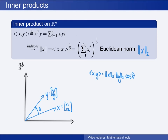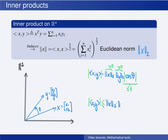Also, since the absolute value of cosine of theta is always less than or equal to 1, we see that this inequality agrees with Schwarz inequality. In particular, if we take the absolute value on both sides, and since the norms are positive by definition, the absolute value of the right-hand side is given by the norms times the absolute value of cosine of theta. This is always less than or equal to 1. In other words, the absolute value of the inner product between x and y is less than or equal to the norm of x times the norm of y, which is exactly what Schwarz inequality states.